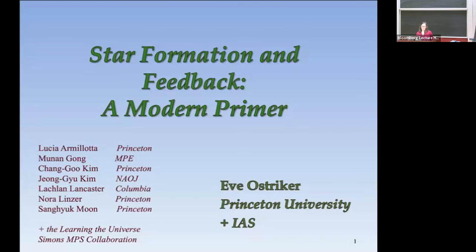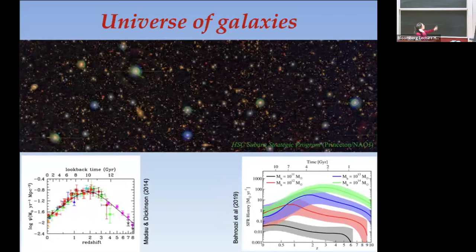So let's get going. I think we'd all be interested in understanding how all of these galaxies came into being, and this is summarized quantitatively in these insets at the bottom — this is the star formation rate as a function of time or redshift, broken down by masses.